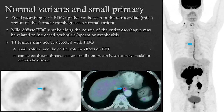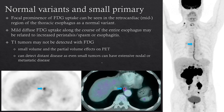Normal variants and small primaries: you can normally see prominent FDG uptake in the retrocardiac region of the thoracic esophagus — this is a normal variant. You can also see diffuse uptake along the esophagus due to peristalsis, spasm, or esophagitis. T1 tumors may not be detected with FDG due to their very small size and partial volume effects. However, even if the tumor is small, you may still detect distant disease, as even small tumors can have extensive nodal or metastatic disease.